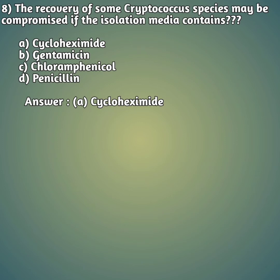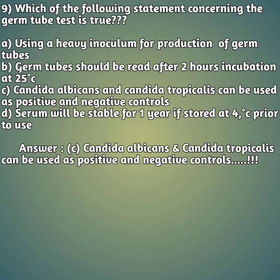Ninth question: which of the following statements concerning the germ tube test is true? Option A: use a heavy inoculum for production of germ tubes; option B: germ tubes should be read after two hours incubation at 25°C; option C: Candida albicans and Candida tropicalis can be used as positive and negative controls; option D: serum will be stable for one year if stored at 4°C. The right answer is option C.